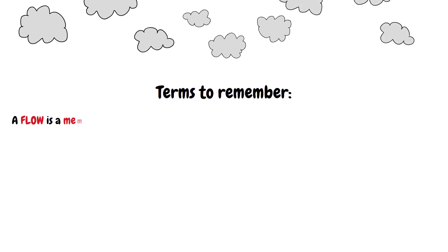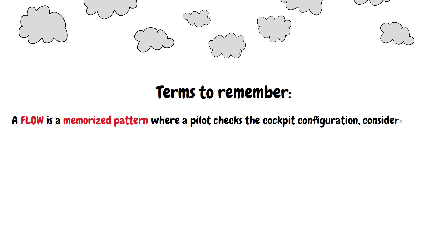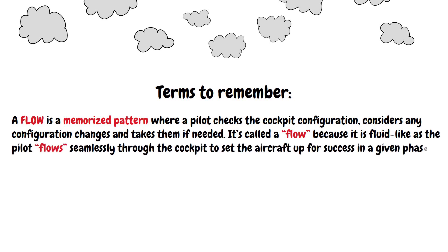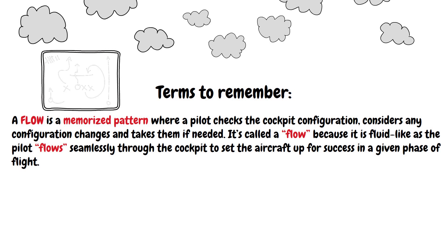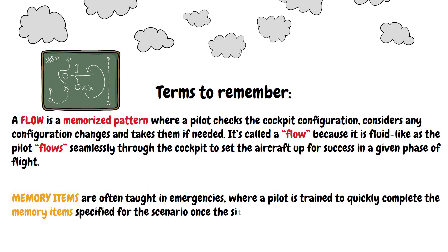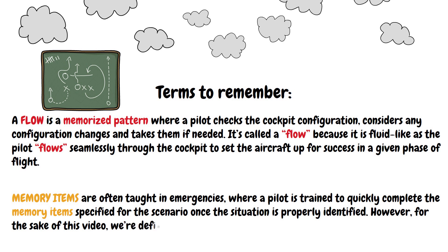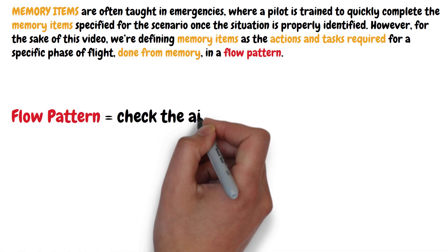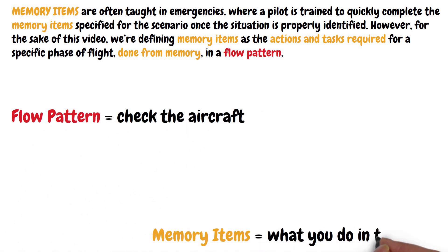Before we get into which method to use, let me briefly explain some terms for the new guys. A flow is a memorized pattern where a pilot checks the cockpit configuration, considers any configuration changes, and takes them if needed. It's called a flow because it is fluid-like as the pilot flows seamlessly through the cockpit to set up the aircraft for success in a given phase of flight. Memory items are often taught in emergencies, but for the sake of this video, we're defining memory items as the actions and tasks required for a specific phase of flight done from memory in a flow pattern. Basically, a flow is a pattern for checking the aircraft, and memory items are the tasks completed in the flow.